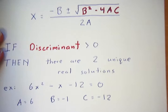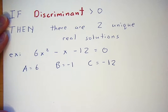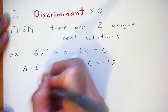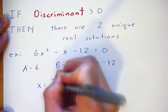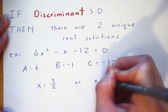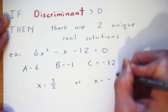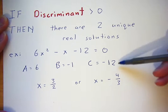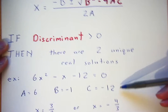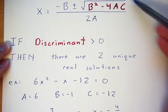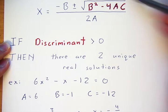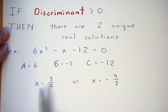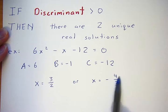After I finish plugging into the quadratic equation and simplify, my solutions will be x equals 3 over 2, or x equals negative 4 over 3.